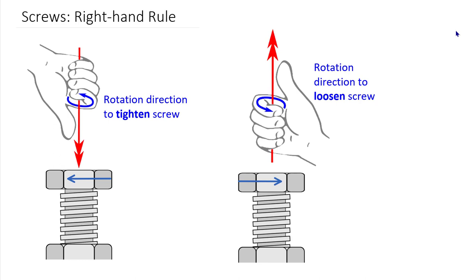All of you likely even today have done something with a screw thread — it might have been opening your shampoo in the shower, or opening a cap on your peanut butter or any food item that has a right-hand threaded screw. I'm going to show you how to use the right-hand rule to determine which way to rotate a screw. All of you are probably very used to the idea some of us call righty-tighty lefty-loosey.